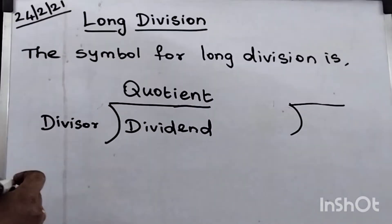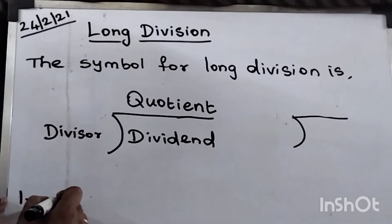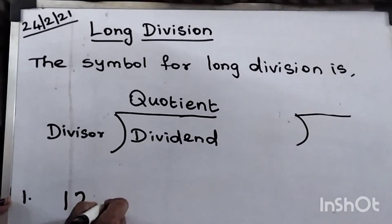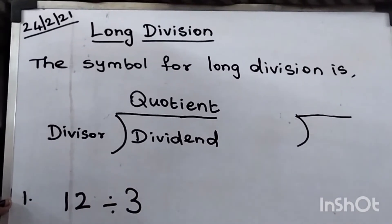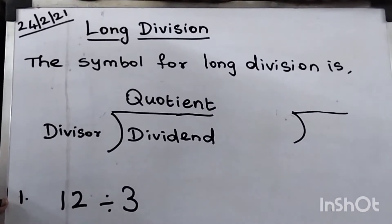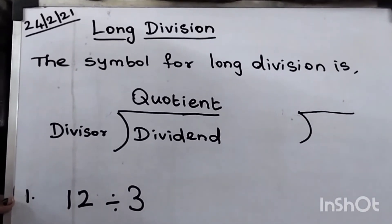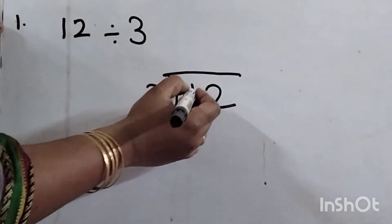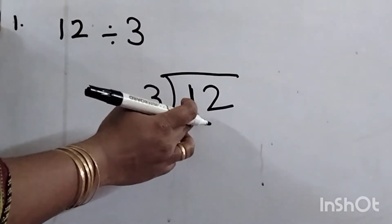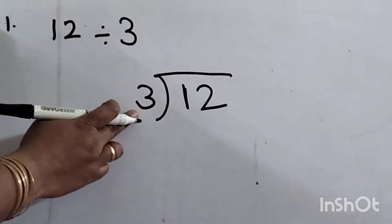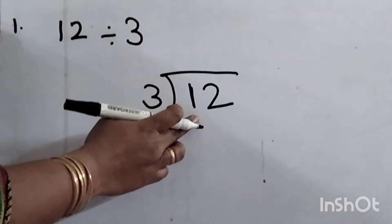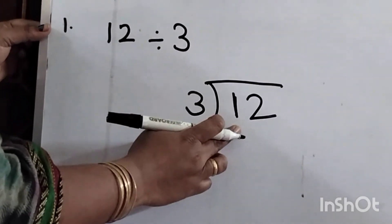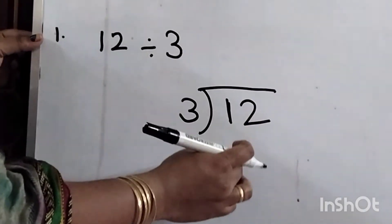For example, I am going to divide 12 divided by 3. Now, arrange like this — divisor, dividend. Whenever you start division, look for the first digit children. Here, the first digit is less than the divisor. Always the first digit should be equal to or greater than the divisor. If it is greater than or equal to the divisor, we can take only one digit and divide.